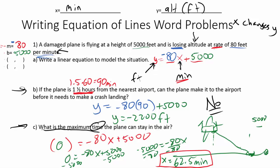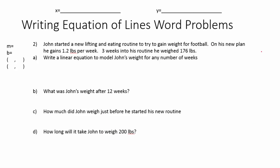That was the case where the math is probably easiest — they gave you the slope and the y-intercept directly, so you can write the equation right away. Here's the next example: John started a new lifting program and eating routine to gain weight for football. I'm going to start by identifying the variables right away — identifying what x and y are.